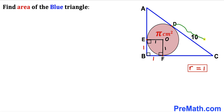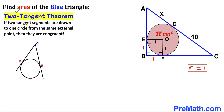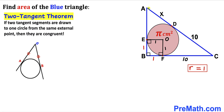Let's focus on hypotenuse AC. Segment CD = 10, and let's assume AD = x centimeters. By the two tangents theorem — if two tangent segments are drawn from the same external point to a circle they are congruent — CF = 10 and AE = x as well.